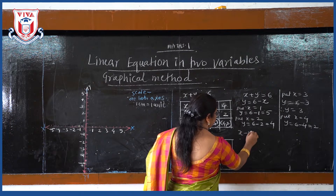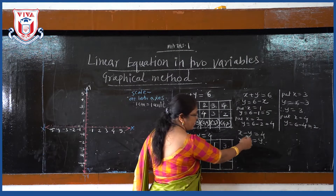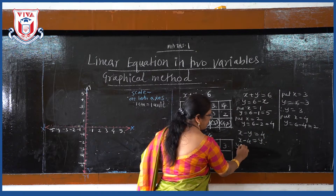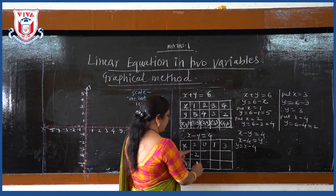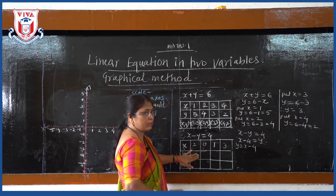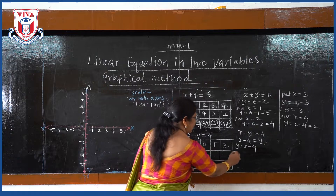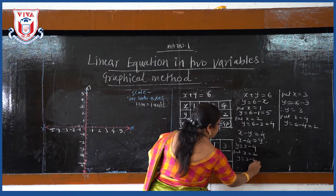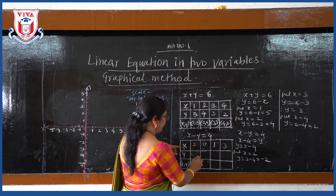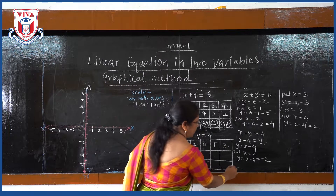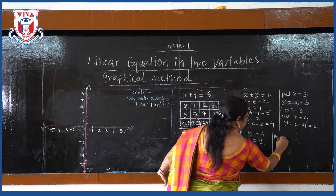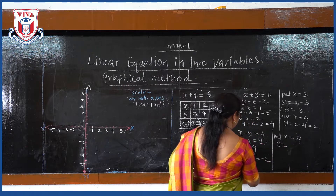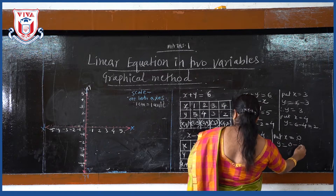Next, the second equation is x minus y equals 4. Rearrange the equation: bring y to the right and 4 to the left, so y is equal to x minus 4. Now put x equal to 2, so y is equal to 2 minus 4, which is minus 2. When x equals 2, y equals minus 2. Put x equal to 0, then y is equal to 0 minus 4, which is minus 4.